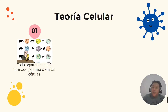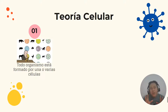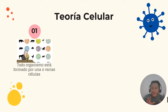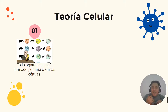El primer enunciado decía que todo organismo está formado por una o varias células. No importa el organismo que sea, no importan las características, ya sea animal, planta, vegetal, un alga, un protozoario o una bacteria — siempre va a estar constituido por una o varias células.